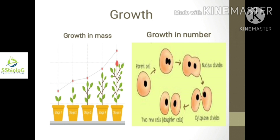But in the case of living organisms, they undergo an internally regulated growth pattern. Multicellular organisms can grow in mass by cell division. In plants, this growth occurs continuously throughout their whole lifespan, whereas in animals this growth is seen only up to a certain age.